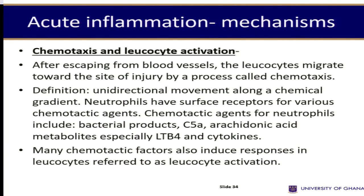After the cells move out of the vessel, they go through chemotaxis and activation. Chemotaxis is defined as unidirectional movement along a chemical gradient. The neutrophils have receptors for various chemotactic agents, and these agents bind to these receptors so the neutrophil can know exactly where to go. For instance, if a bacterium is growing in an area, then the bacteria products will serve as the chemotactic agents — they will be denser where the bacteria are and less dense further away, so as soon as the neutrophil comes out of the vessel, it can know exactly where to go by binding these agents and detecting where they are denser.